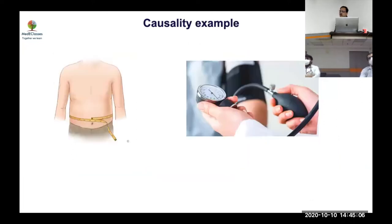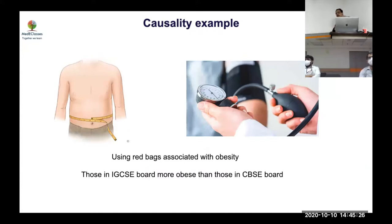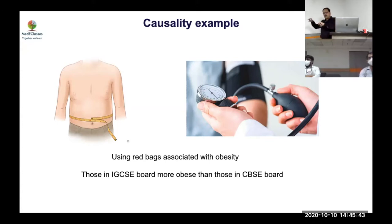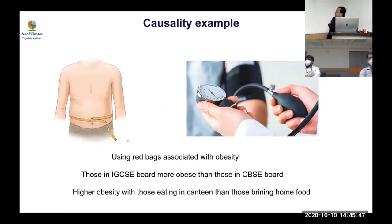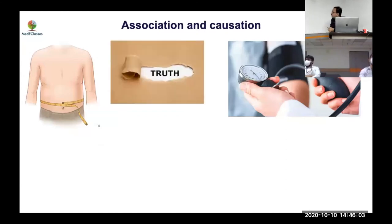For example: if studying obesity and high blood pressure, someone found that red bags are associated with obesity — clearly no biological plausibility, just association. Or if students from one school are more obese, there may be confounders like less physical activity. But if more obesity is associated with higher blood pressure, this looks biologically plausible and warrants further experiment.